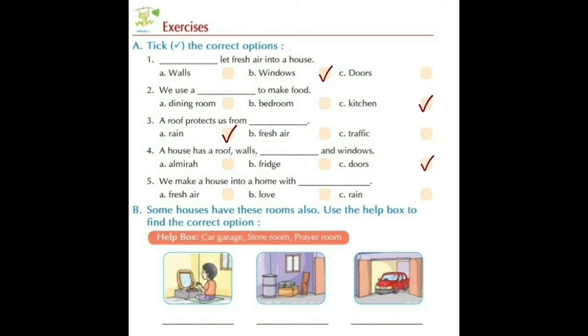Number five: We make a house into a home with blank. Option A: fresh air, Option B: love, Option C: rain. The correct answer is Option B — love. We make a house into a home with love.